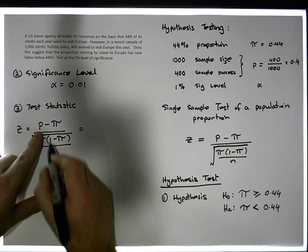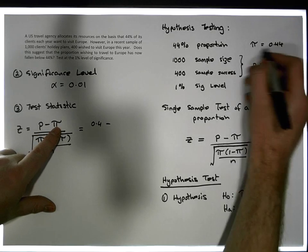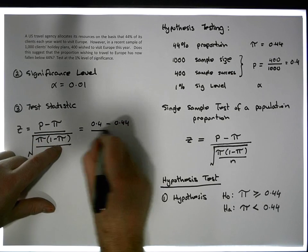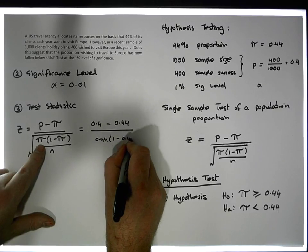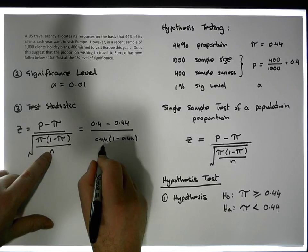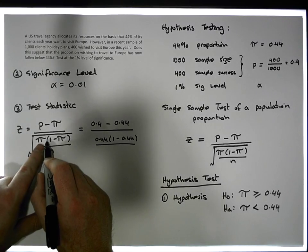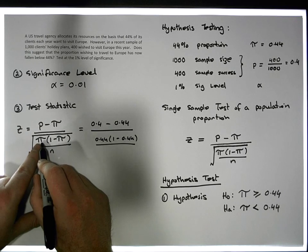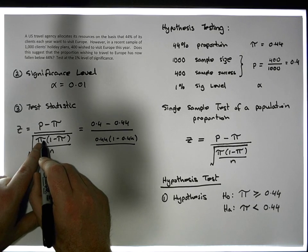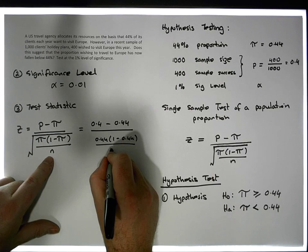Plugging in numbers: p-hat is 0.4, minus pi which is 0.44, divided by pi times one minus pi — that's 0.44 times 1 minus 0.44. Note that pi here is not 3.14...; it's pi for proportion — the population proportion. Divided by n, our sample size of 1000, under the square root.